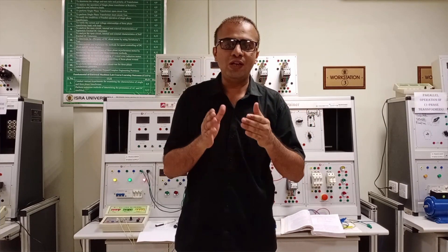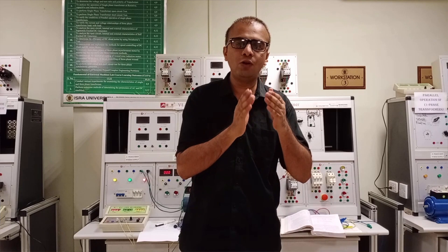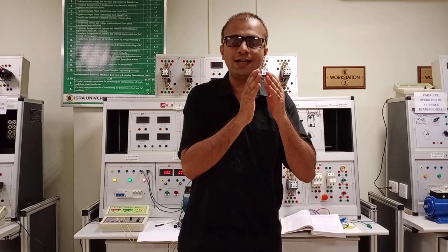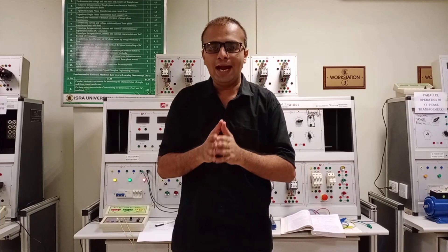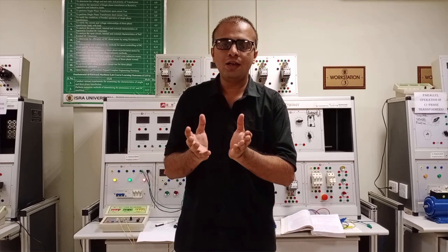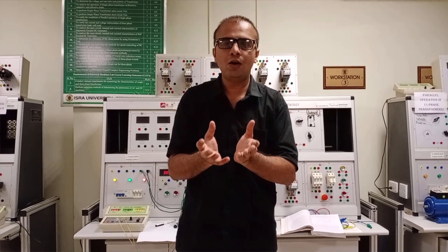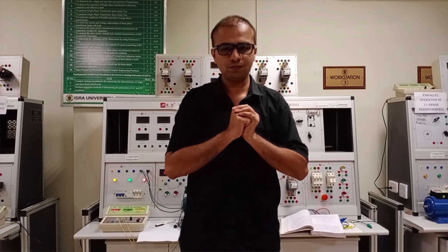The field current is given to the field excitation of the field windings, and also the voltage that can be generated or produced from the armature of the DC machine.